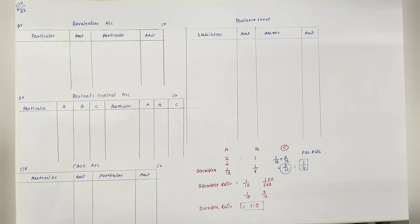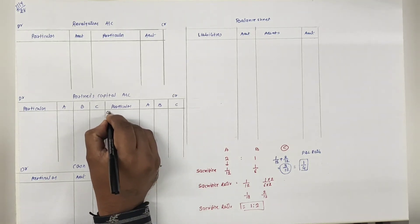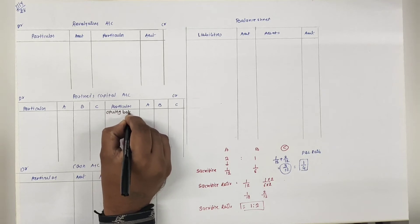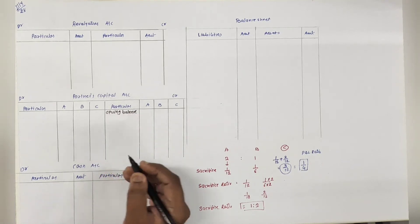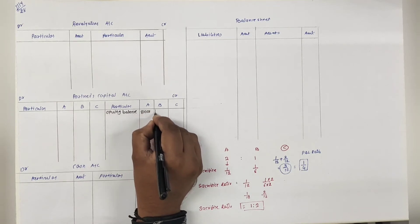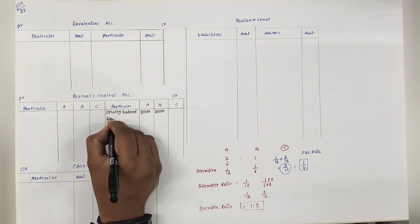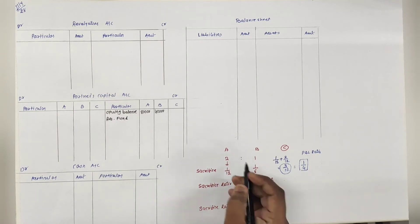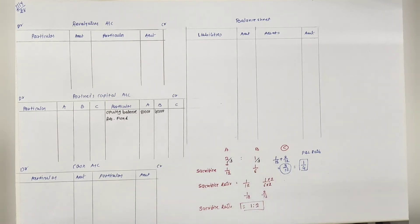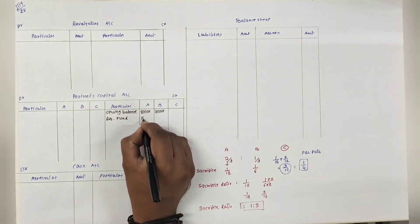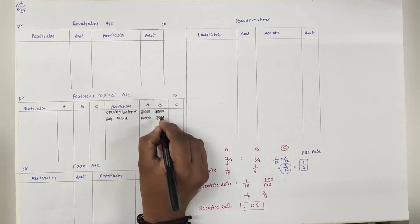तो हम हमारा sum start करते हैं. सारे adjustments हमने सुन लिए. सबसे पहले capital में लिखेंगे opening balance - amount is 80,000 and 40,000. Reserve fund - as per rules, partners के बीच में old ratio में share होता है, यानि कि 2:1 में. 21,000 को 2:1 में convert करेंगे - amount मिलेंगे 14,000 and 7,000.